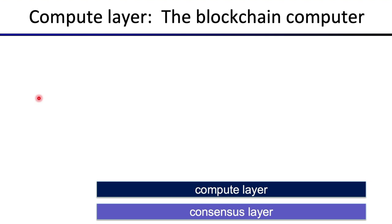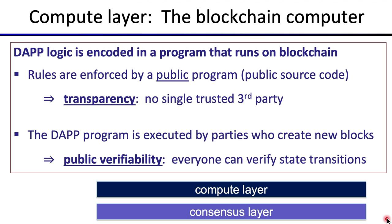The next layer I want to talk about is the compute layer — what we call the blockchain computer — which allows us to run applications on top of a consensus layer. Once we have consensus, we have a way to write information so it can never be removed, and we can use that to implement a program. The program moves from one state to another, and all those state transitions are written to the blockchain so everyone can verify that those state transitions are valid.